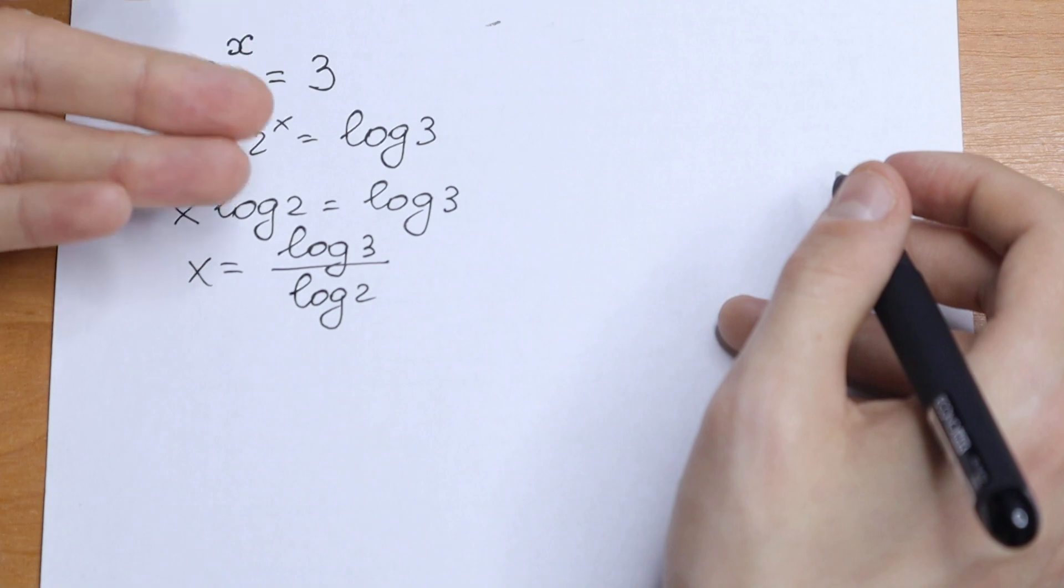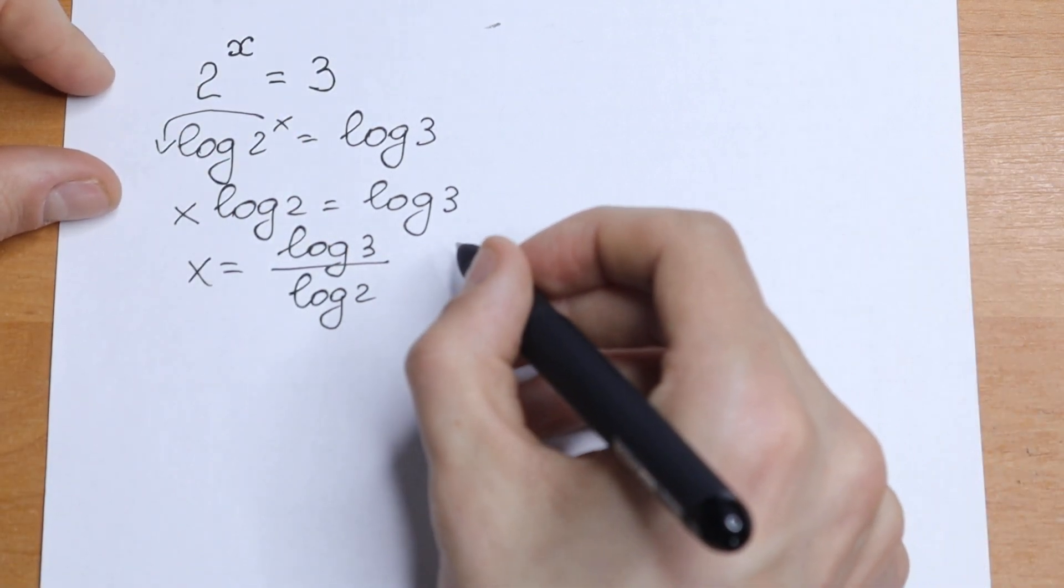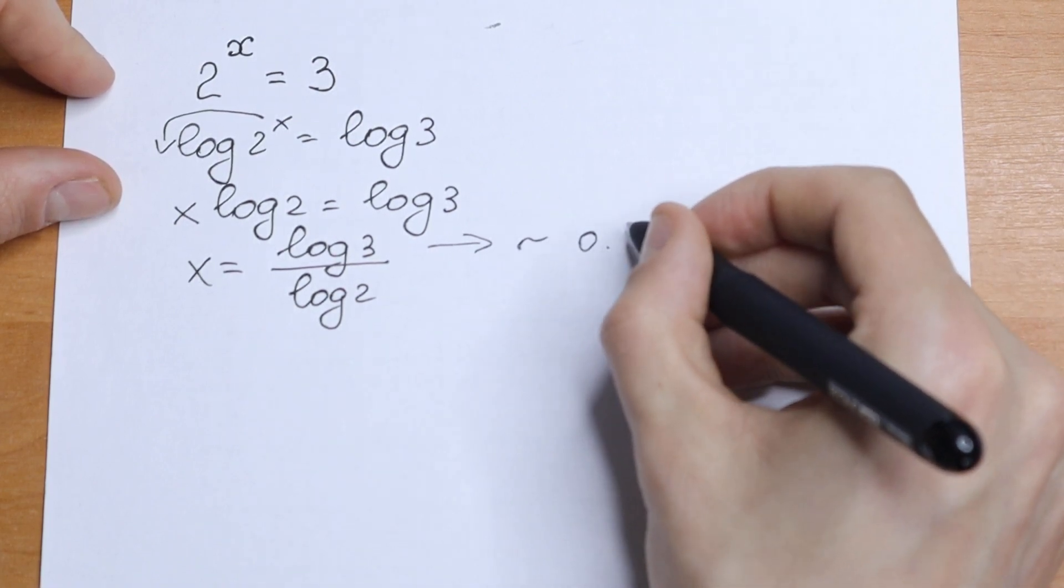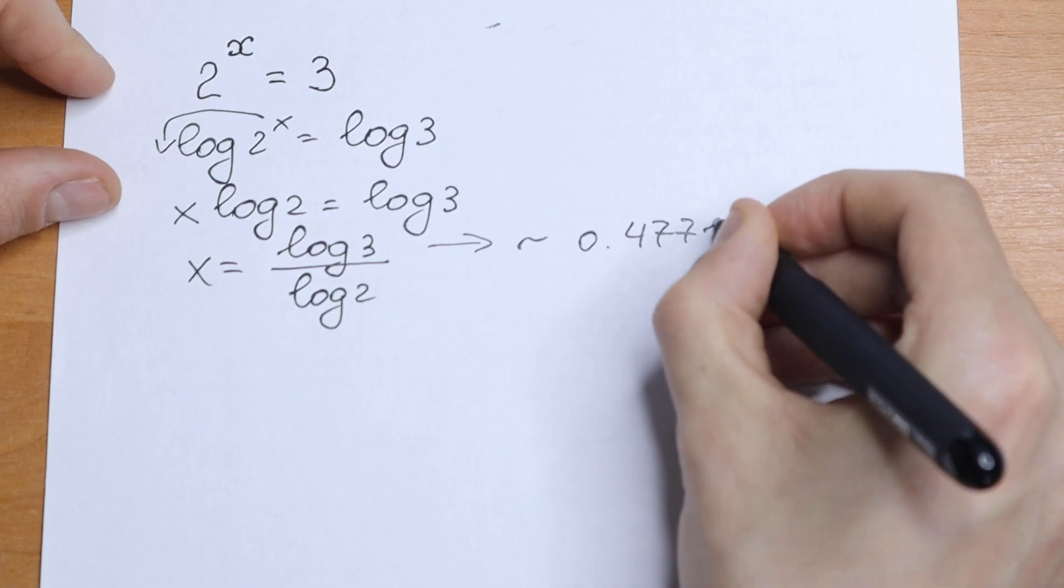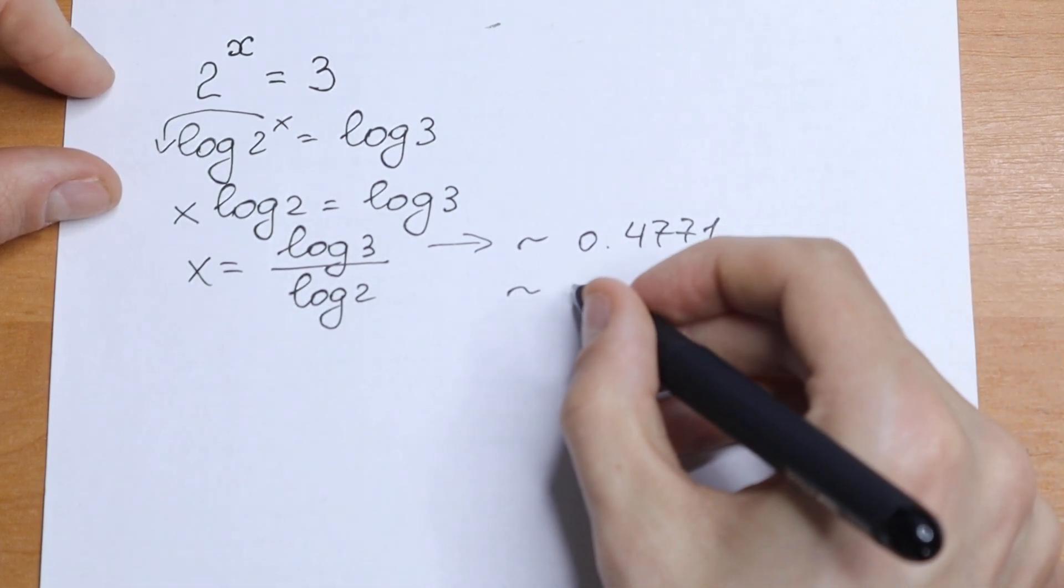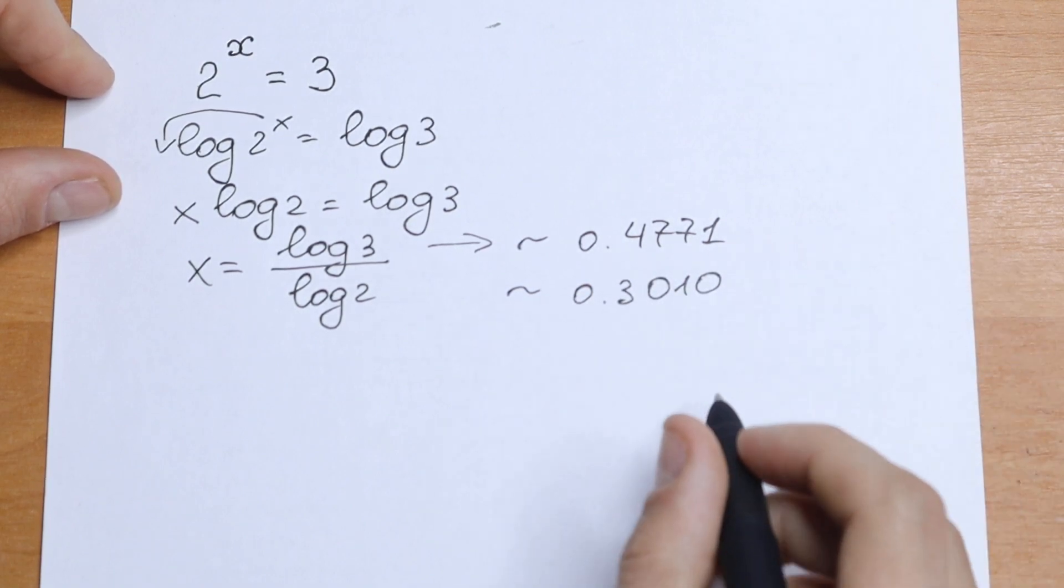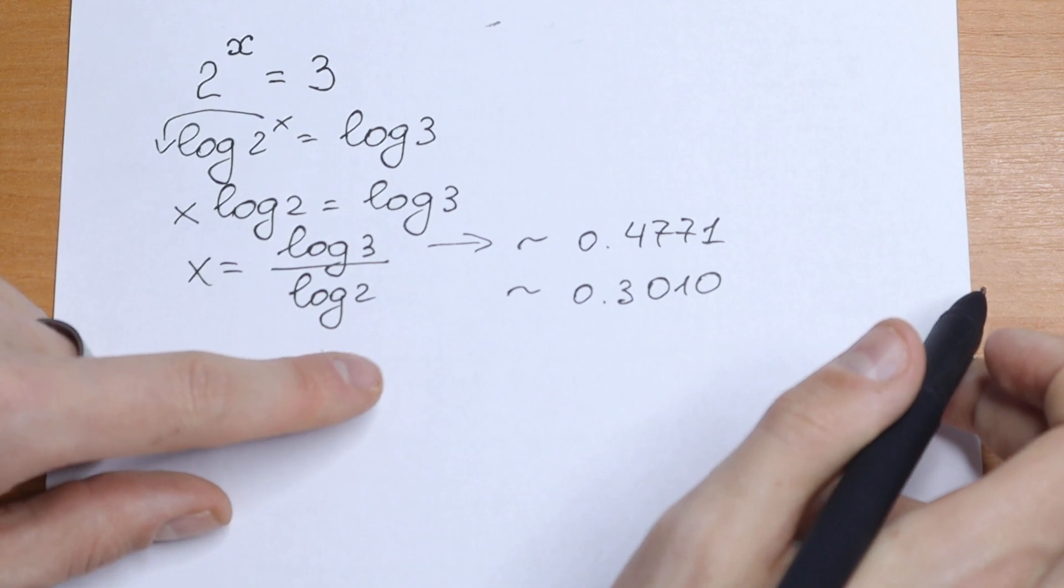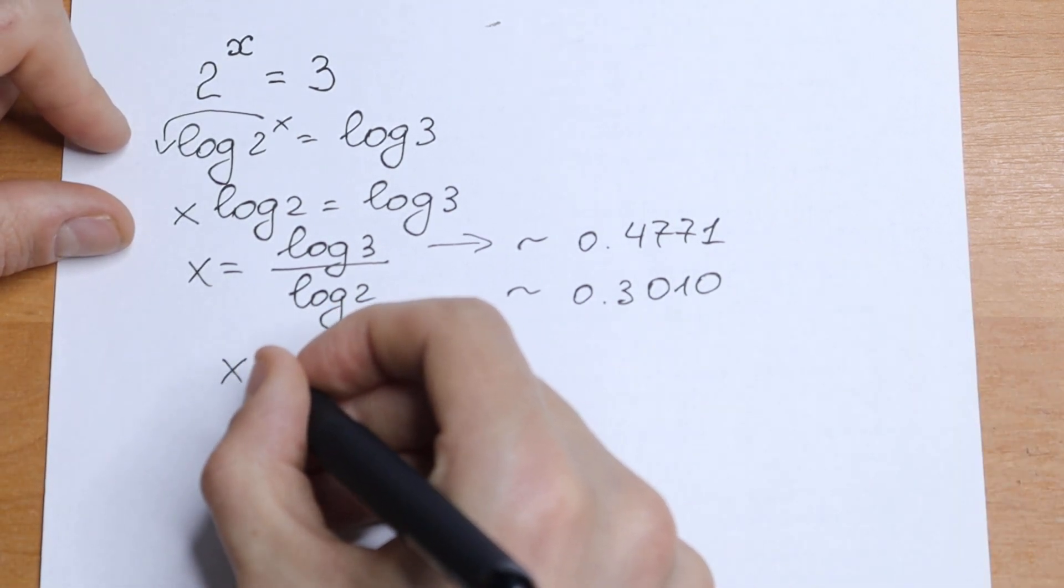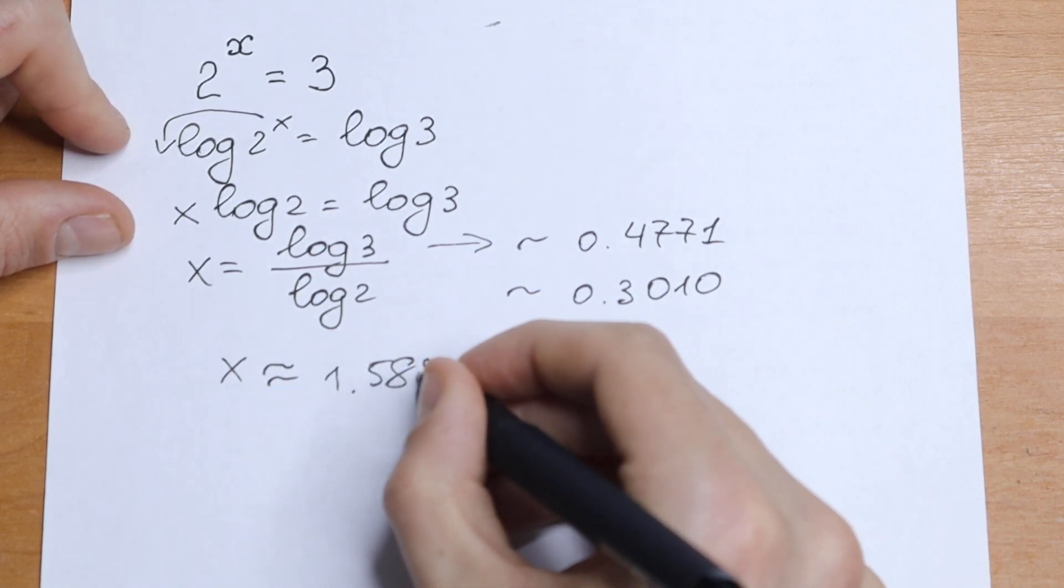But take a look. Let's simplify this. Let's try to find approximately this answer. We know that log 3 is approximately equal to 0.4771 and log 2 approximately equal to 0.3010. If we divide these we will have our approximate answer. x is approximately equal to 1.585.